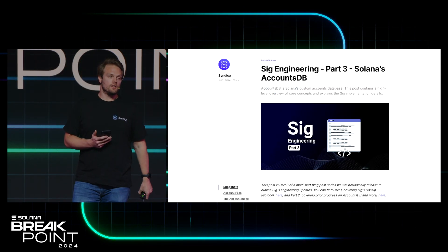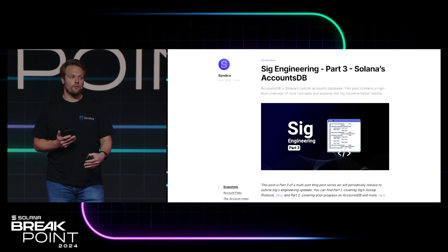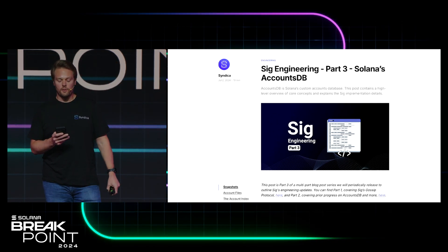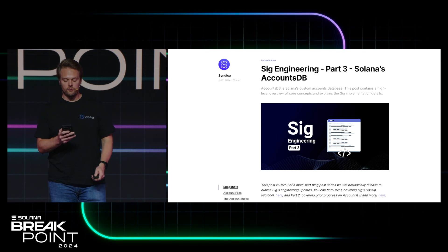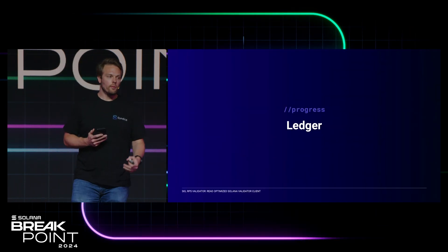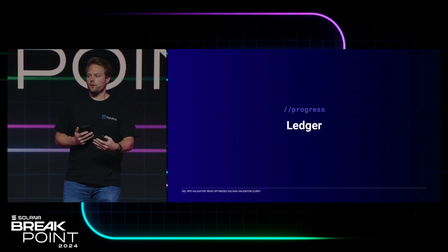We recently published a deep dive blog post about this, so I highly recommend you check that out on the Syndica website. If you remember, I mentioned there's another type of data stored in Solana — transactions. Transactions represent changes to the accounts, and the ledger contains all of the history of transactions. The ledger is used throughout the validator — for RPC, consensus, turbine, gossip, proof of history. Any time you want to find the status of a transaction, it needs to look in the ledger.